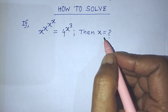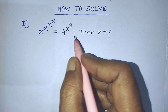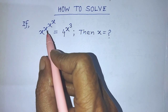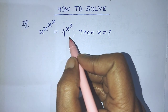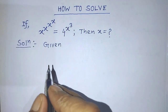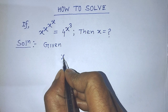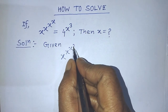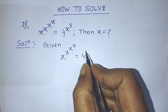So today in this video, I will tell you how to find the value of x from the given equation. Our given algebraic equation is x raised to the power of x to the power of x to the power of x, is equal to 4 raised to the power of x to the power of 3.